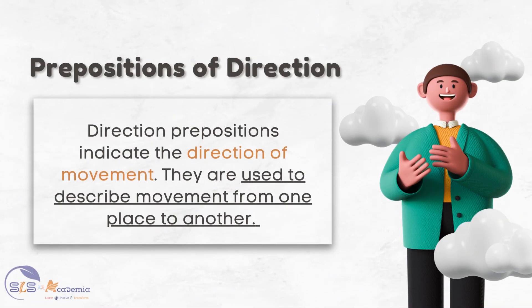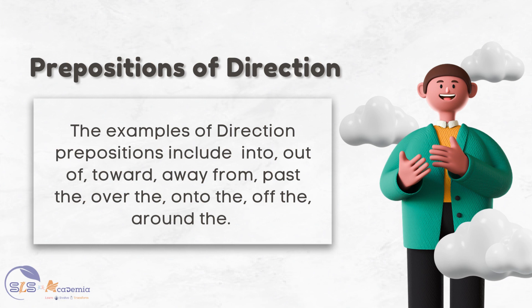The next type of prepositions are the direction prepositions. Direction prepositions indicate the direction of movement and are used to describe movement from one place to another. Examples of direction prepositions include: into, out of, toward, away from, past, over, onto, off, and around. Let us look at each of these individually.